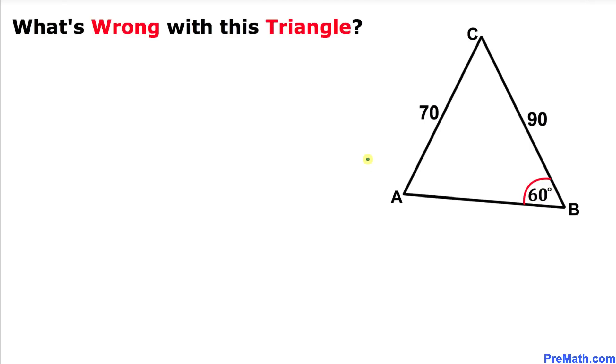Welcome to PreMath. In this video, we have been given this interesting triangle ABC whose two side lengths are 70 and 90 respectively, and one of the angles is 60 degrees. Now the question is, what's wrong with this triangle?